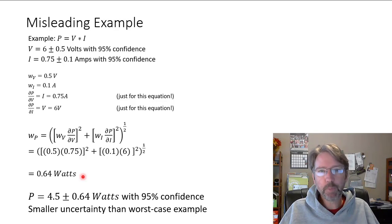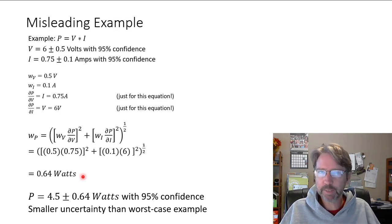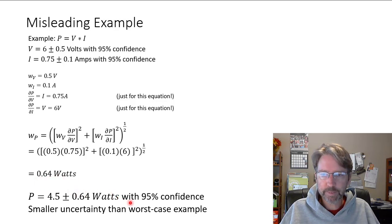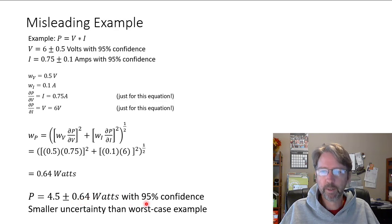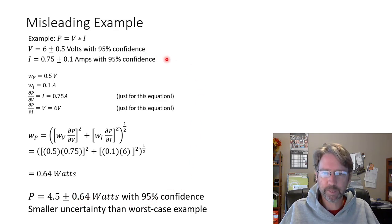That's smaller than the conservative worst-case result of around one watt. This gives us 4.5 watts ± 0.64 watts at 95% confidence — matching the same confidence level as our original measurements, which is exactly what we want.